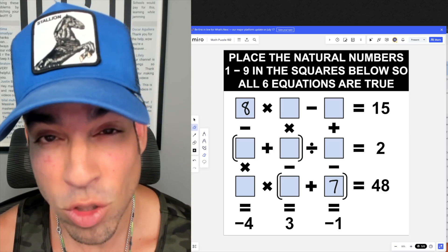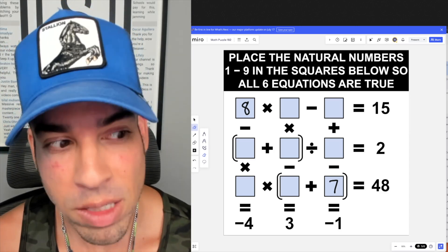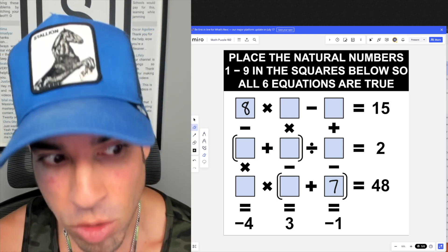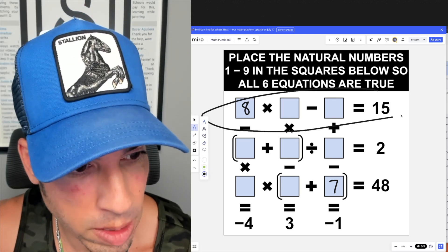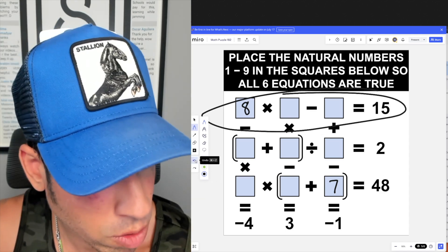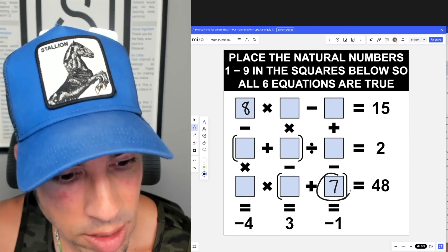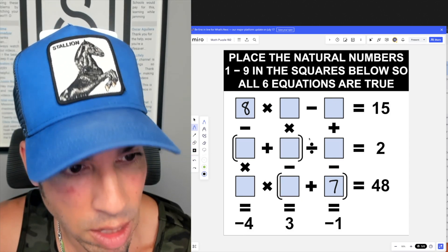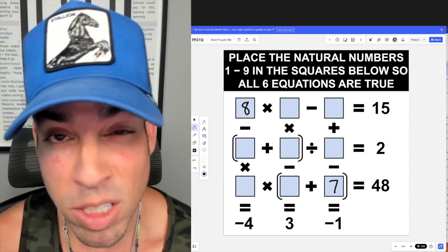What's up everybody and welcome back to another math puzzle. In this one, the question is as follows: place the natural numbers one through nine in the squares below so all six equations are true. We say six equations - we mean one, two, three, and then we also have four, five, six. Notice that seven and eight have already been placed in the puzzle. The remaining boxes need to be found.